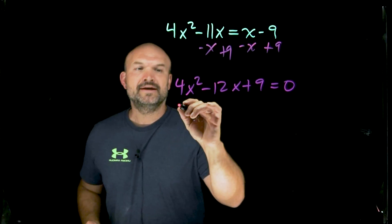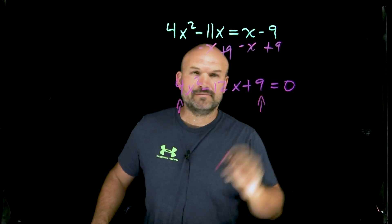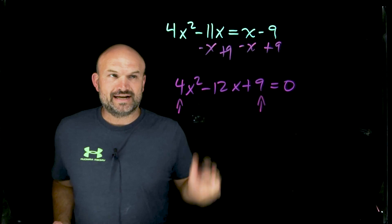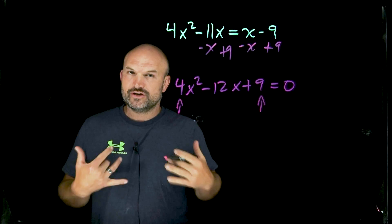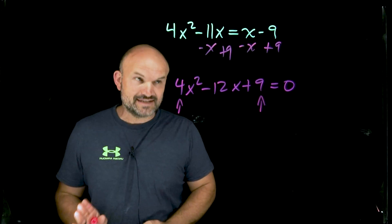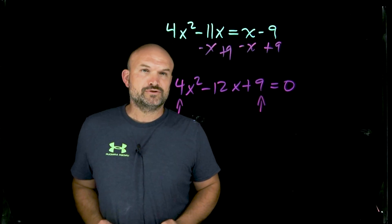Now, one thing that stands out to me is my first term and my last term are squared. Anytime you see a quadratic and your first term and your last term are square numbers, always look for perfect square trinomials. It's not always going to be the case, but that is one thing you always want to be able to look forward to.